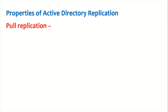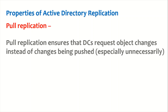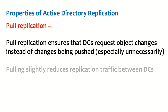The second property is that active directory replication is a pull replication. Pull replication ensures that domain controllers request object changes instead of changes being pushed. If an object gets changed on domain controller 1, domain controller 1 will not push that replication to domain controller 2 — instead, domain controller 2 will pull that replication. This slightly reduces replication traffic between domain controllers.